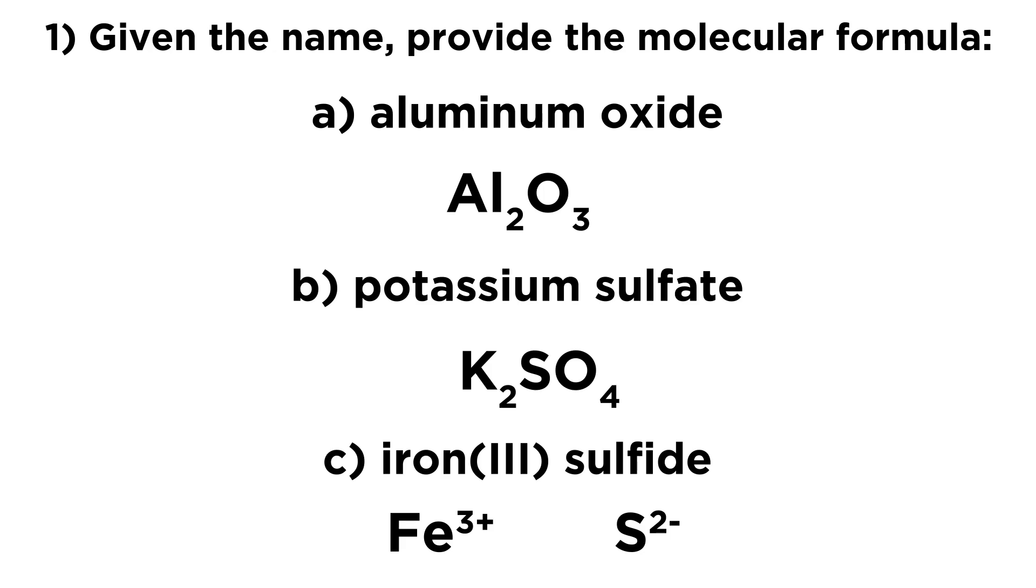Now, once again, what is the ratio in which these ions must come together in order to generate a neutral compound? Well, we have three plus and we have two minus. So what we have to do is have two iron ions and three sulfide ions. That will give us six plus and six minus. That is neutral overall. So we have two irons and three sulfides, and we can write that out as Fe2S3. So these are the molecular formulas that correspond to these names.